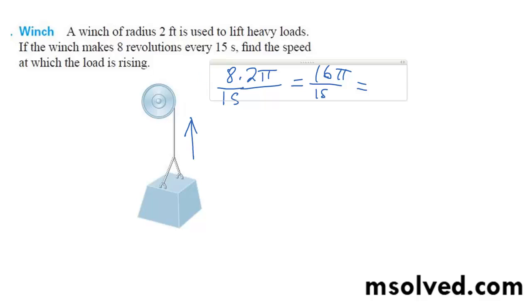Or pi, so 16 pi. Oh, and I'm sorry, what I neglected to do is multiply times the radius. Well, technically that is 2 pi, but times 2, times 2 pi. It gives me 32 pi over 15.